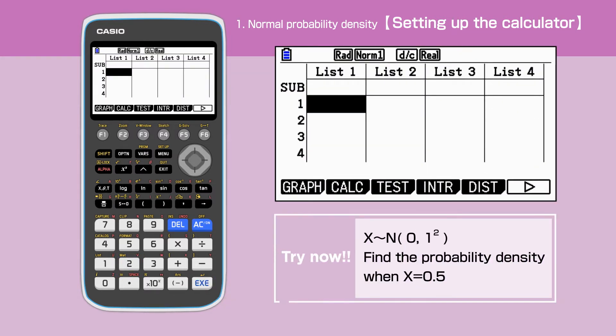First, in this video, we are going to answer the question: What's the probability density when x equals 0.5? Given that, the random variable x is normally distributed with a mean of 0 and a standard deviation of 1.